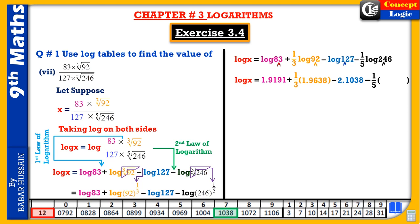For log 246: we place the point of reference after the first digit from the left and count to the decimal position. There are two digits between the point of reference and decimal position, so the characteristic is 2. Searching the log table for 246 gives mantissa 3909.